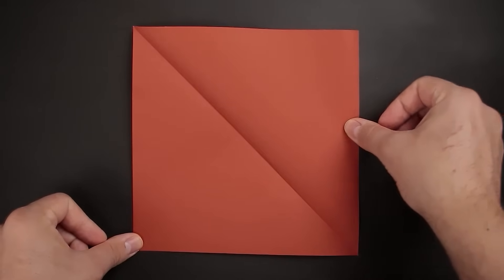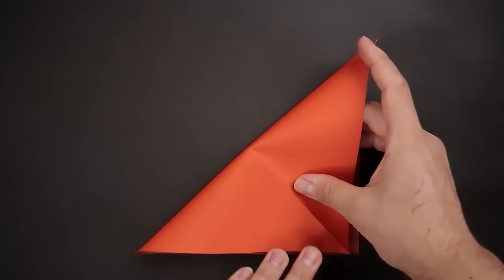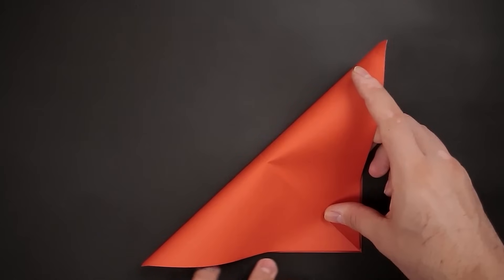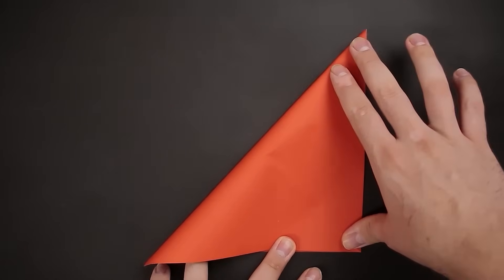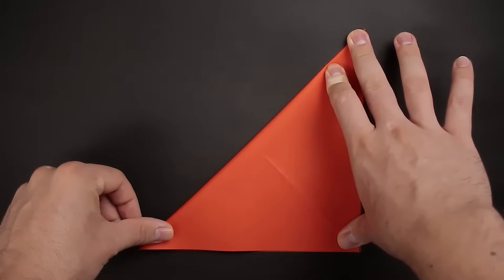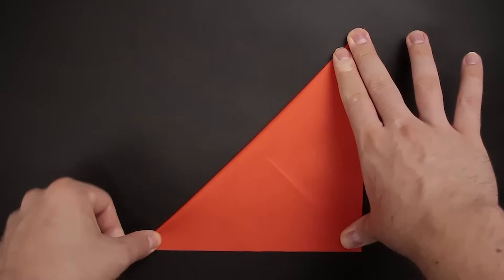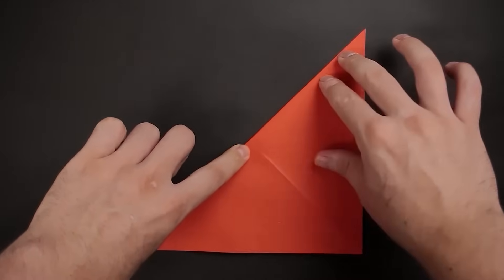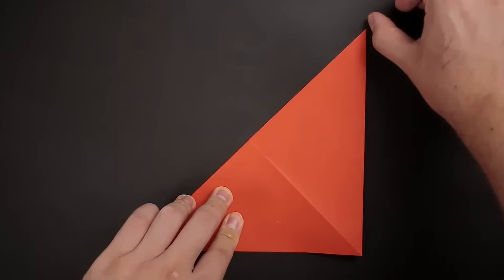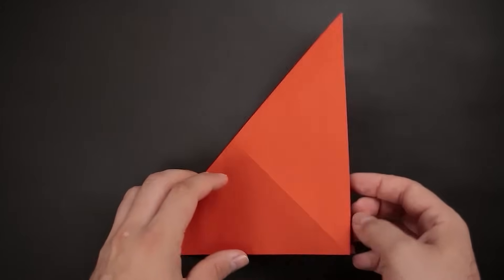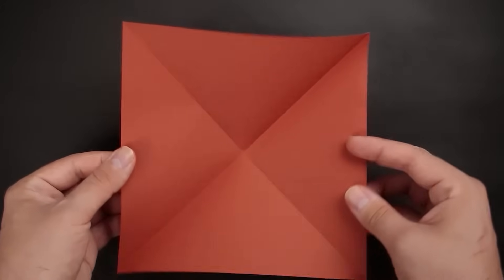and fold the opposite diagonal by bringing the other two corners together. Let's unfold as before, and we have our X.